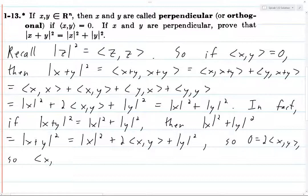So the inner product of x and y is zero, i.e. x and y are orthogonal.